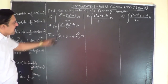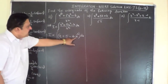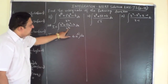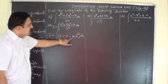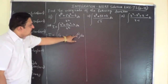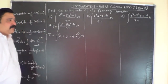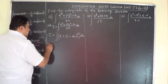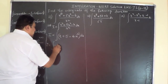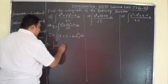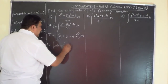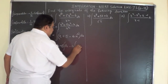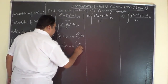4 divided by x² is 4 times x to the power of minus 2, by shifting x² from the denominator to the numerator. Now this becomes: integral of x dx, plus 5 times integral of dx, minus 4 times integral of x to the power of minus 2 dx.